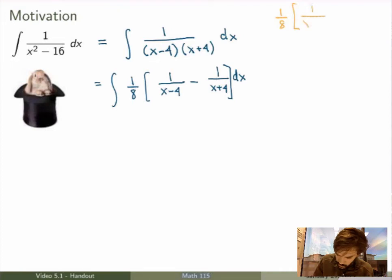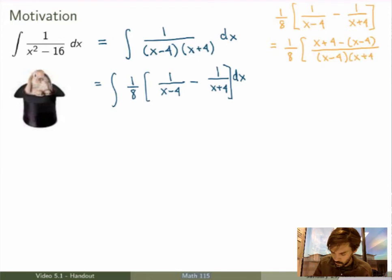So 1 over 8 times 1 over x minus 4 minus 1 over x plus 4. So what I'm going to do here is put everything on a common denominator. So if I put the two terms here in a common denominator, I get x plus 4 minus x minus 4 over the common denominator, which is x minus 4 times x plus 4. And that's where the magic is.